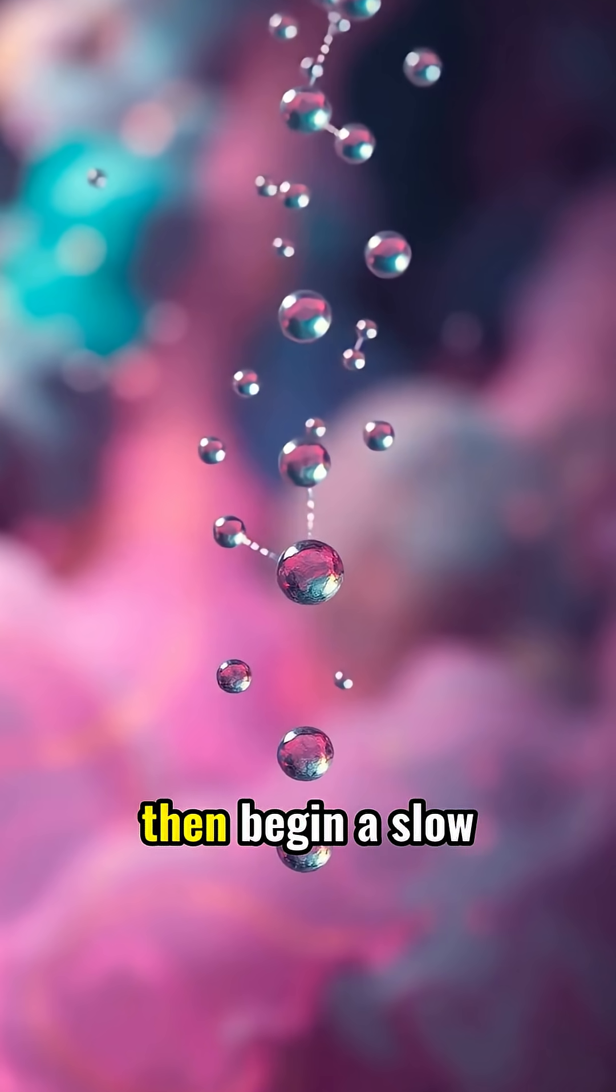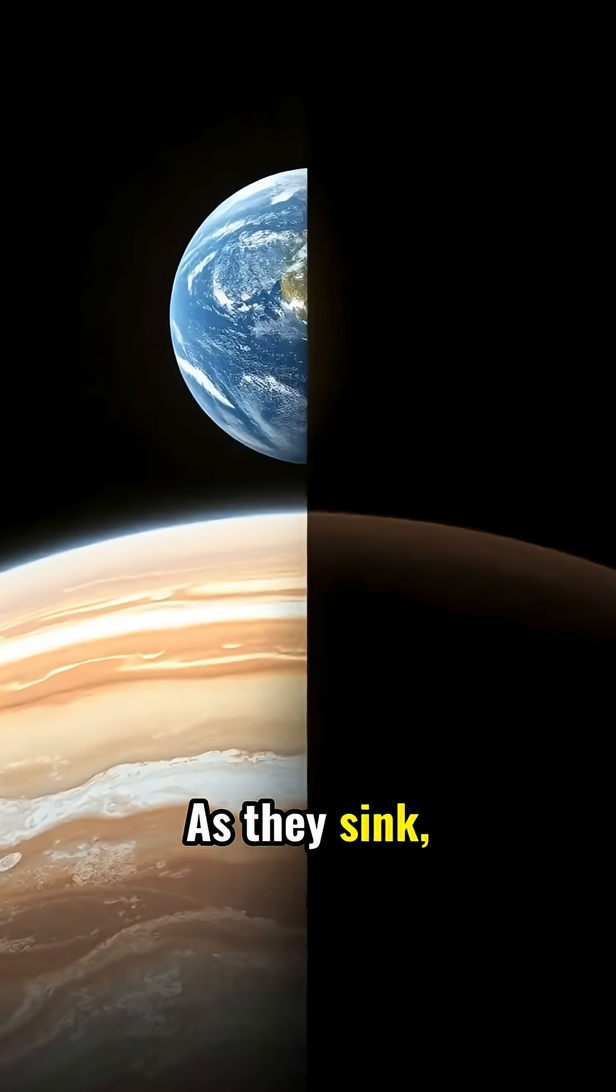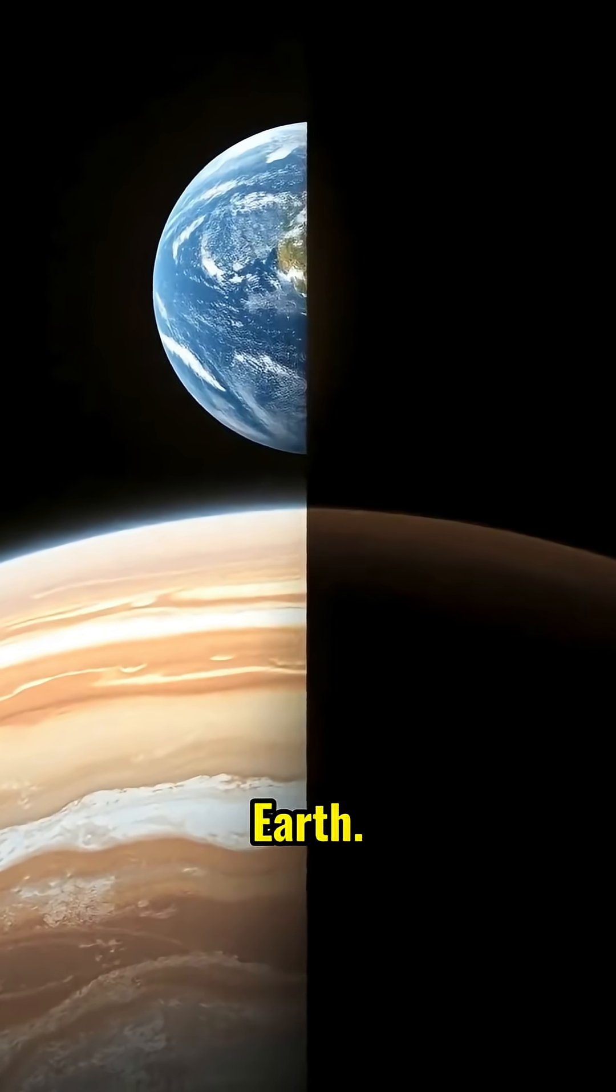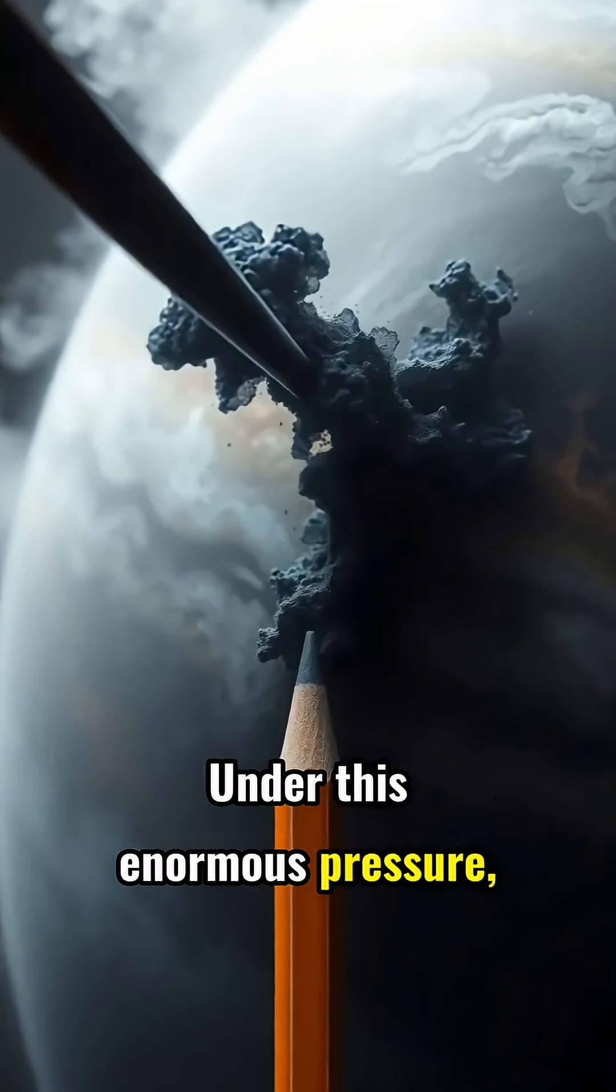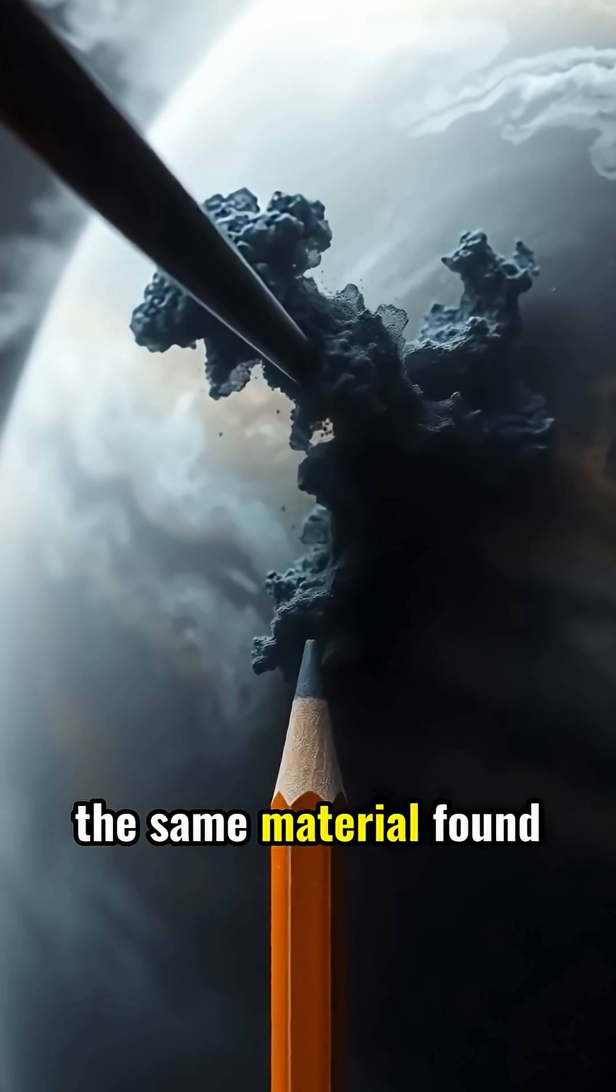These freed carbon atoms then begin a slow descent deeper into the planet. As they sink, the atmospheric pressure increases to levels unfathomable on Earth. Under this enormous pressure, the carbon atoms first compress into graphite, the same material found in pencils.